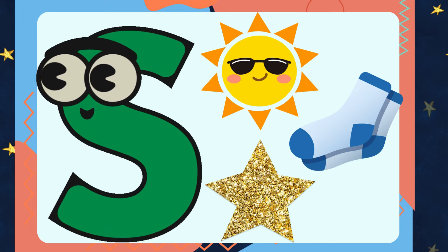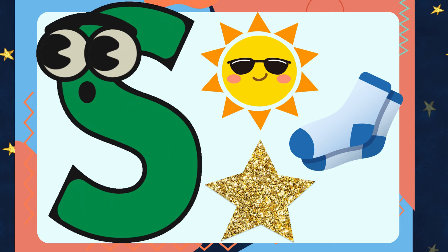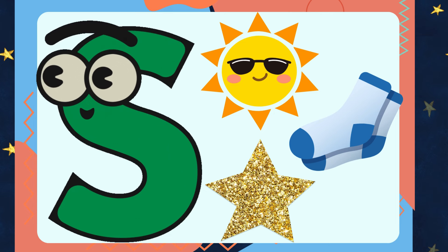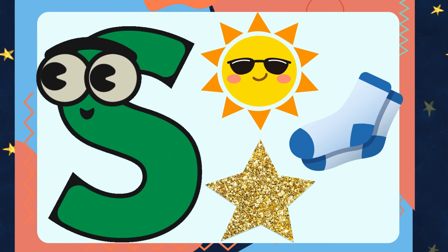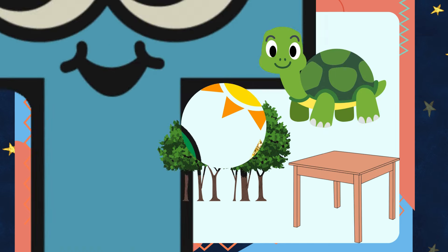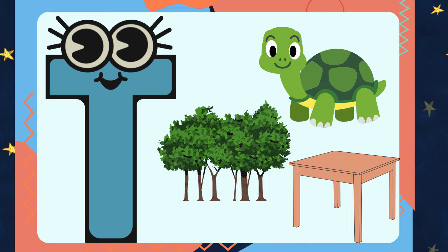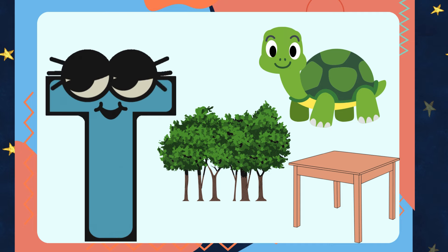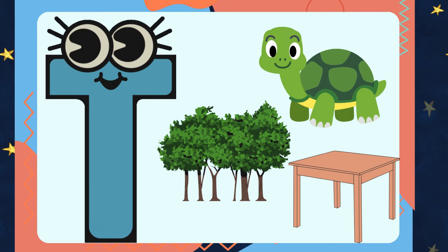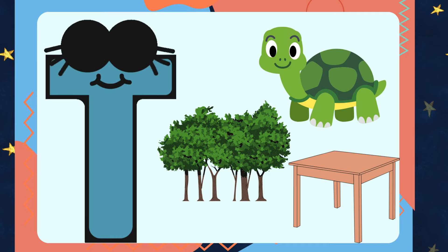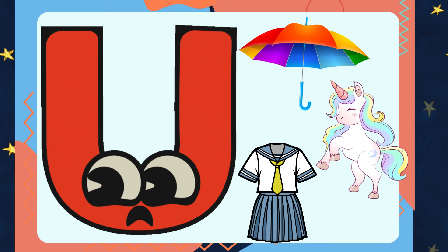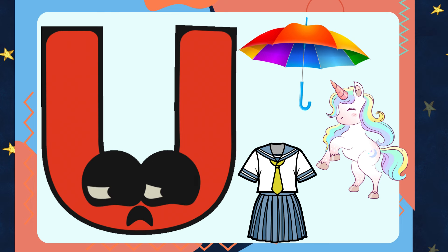S is for Sun, Star, Saw. T is for Turtle, Tree, Table.